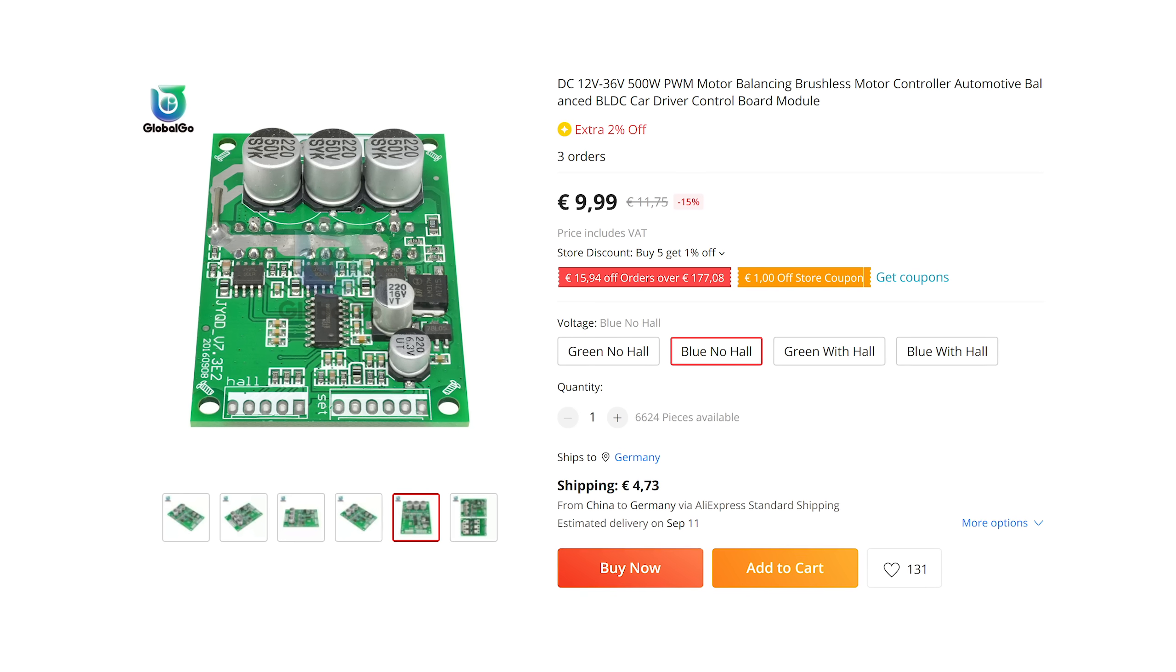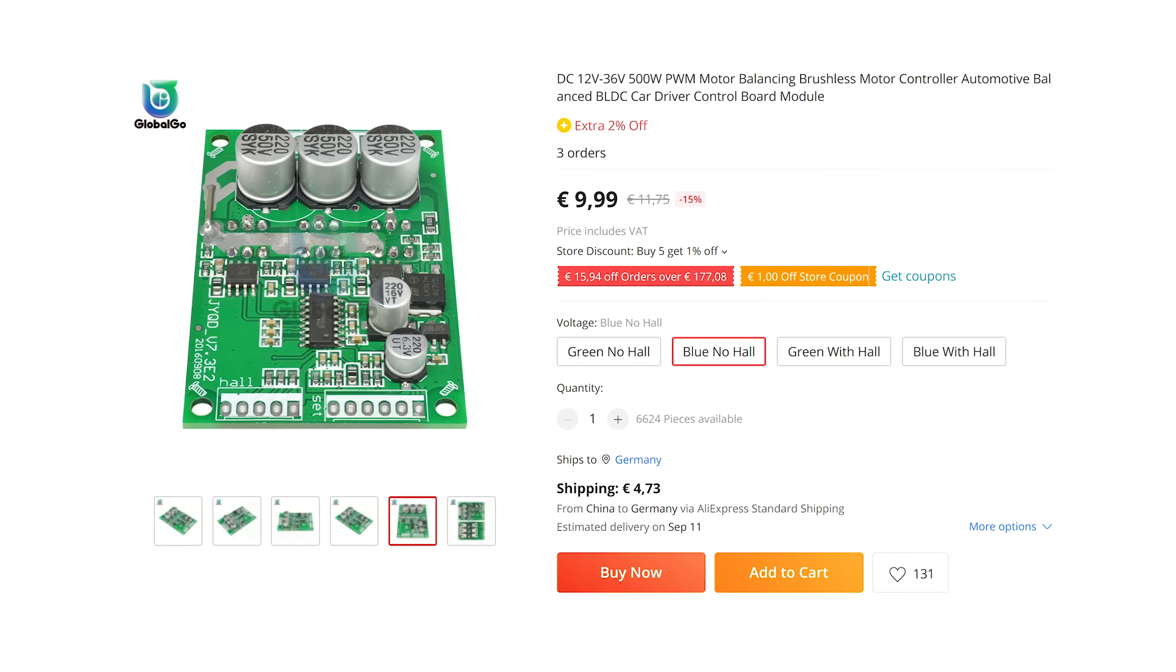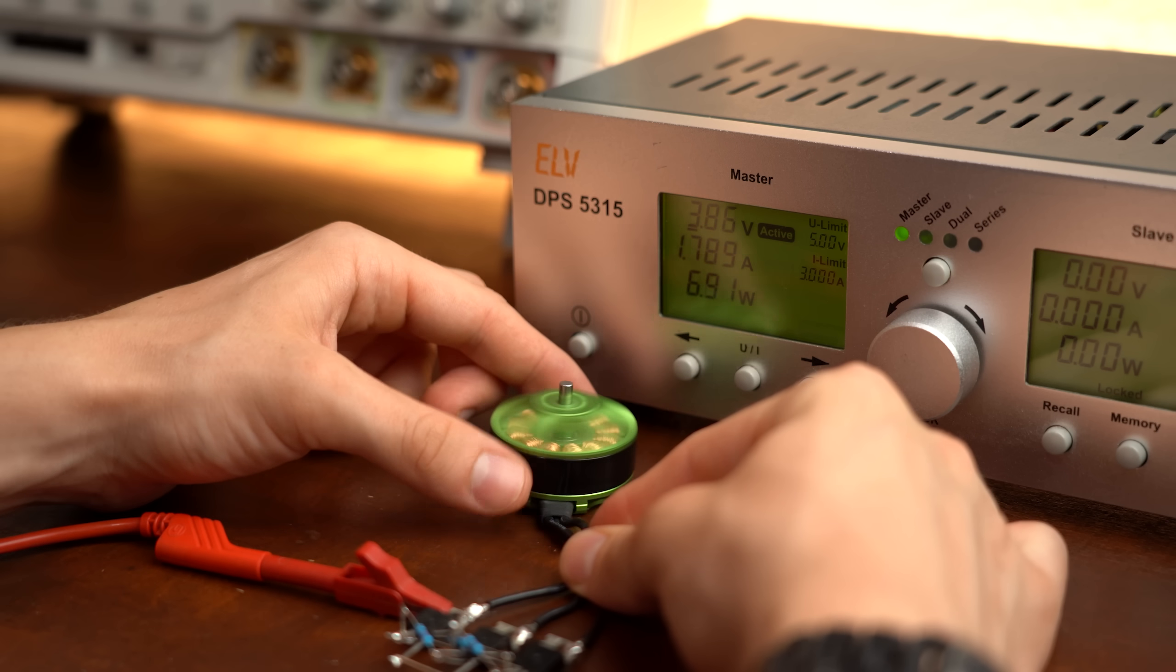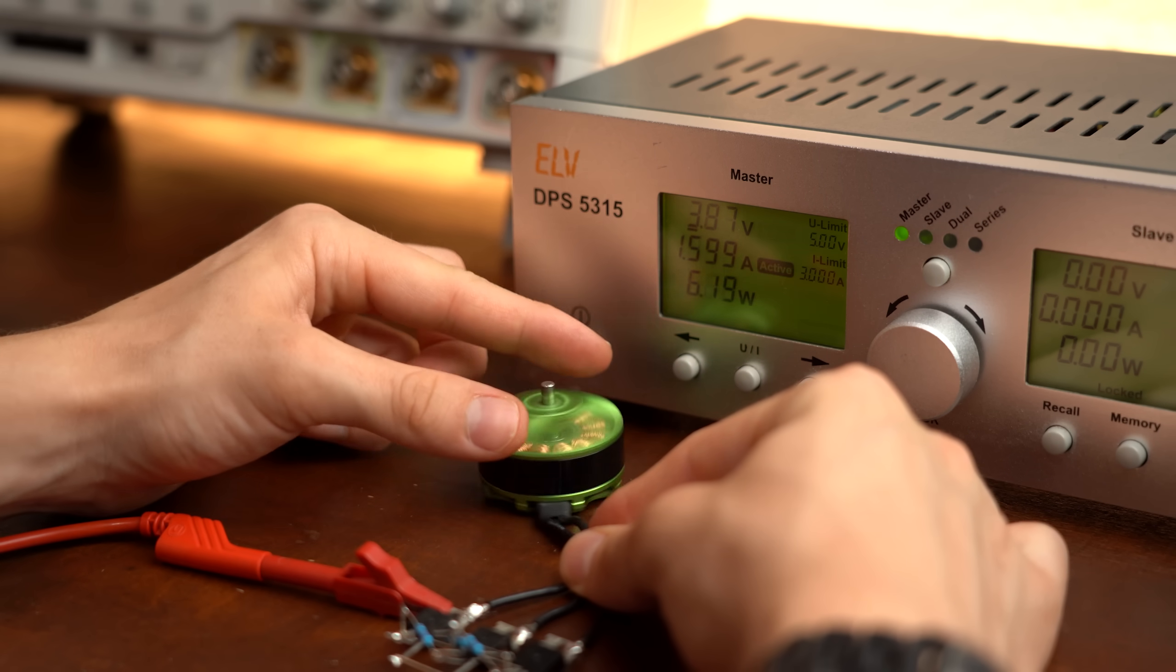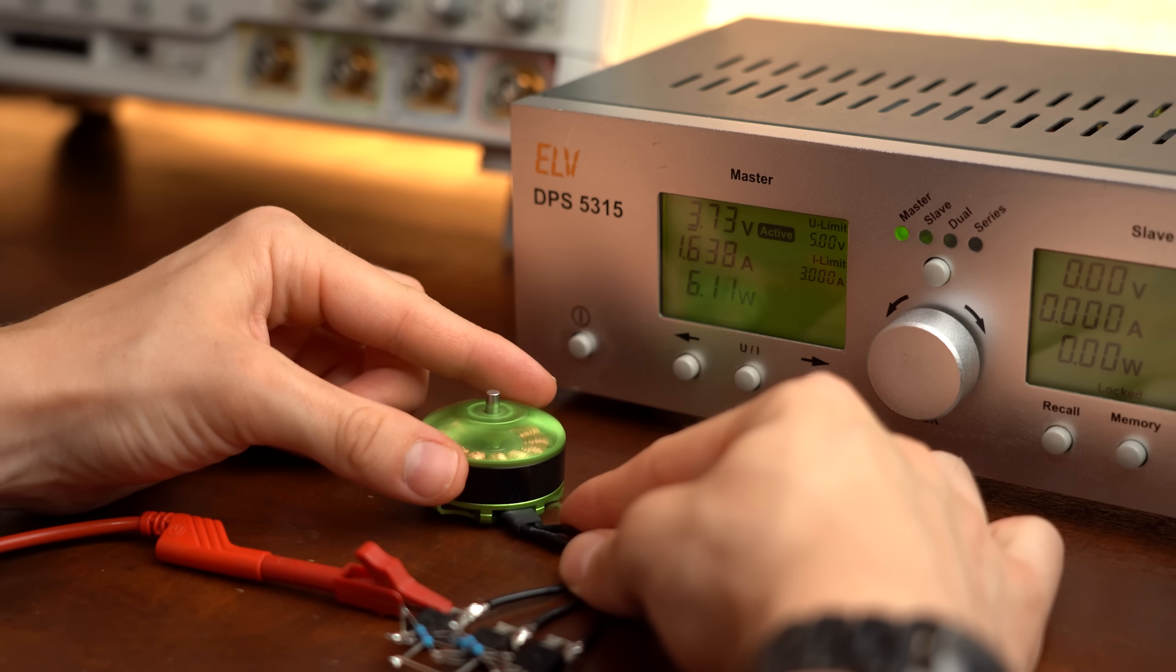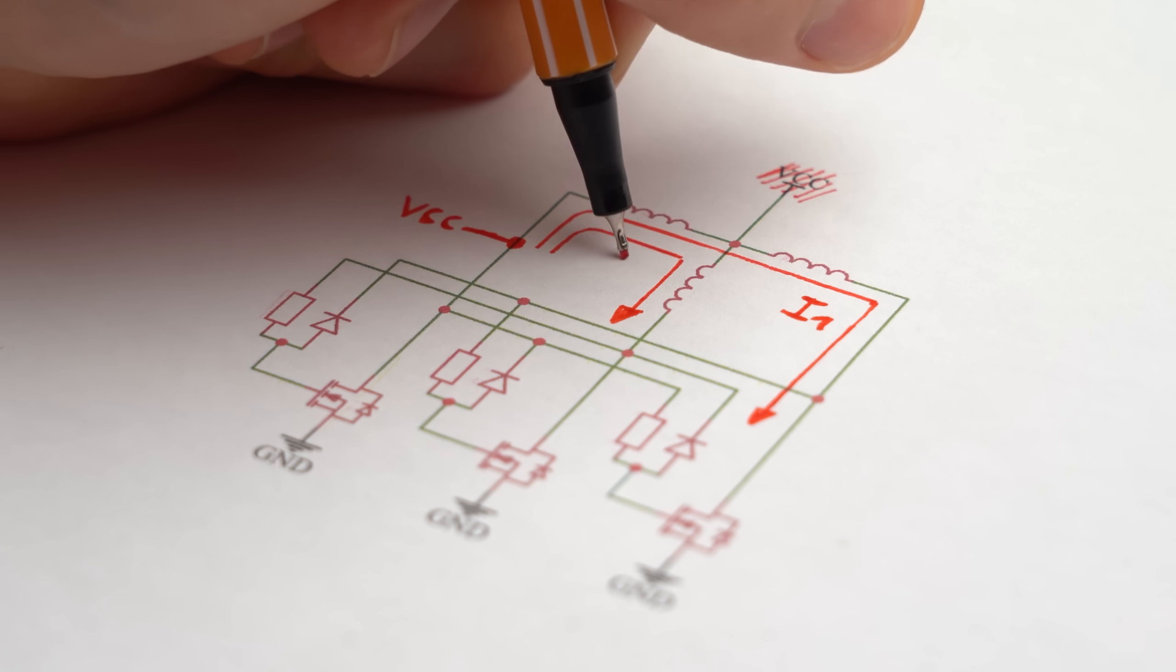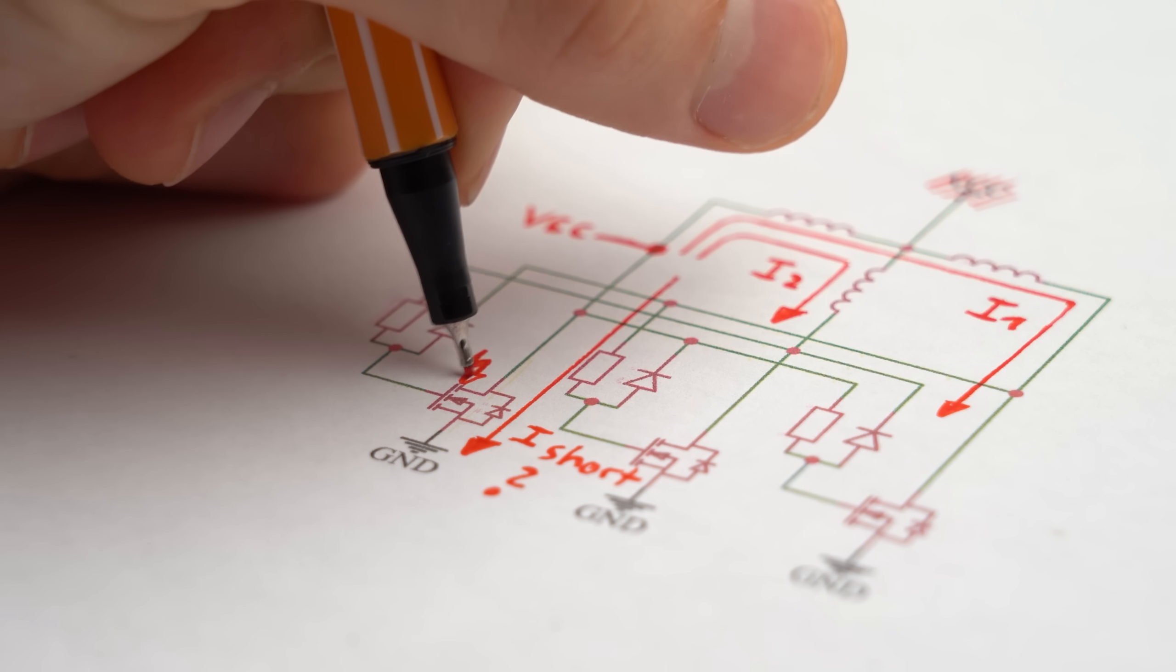But if you still want a cheap and simple ESC then get this one from AliExpress. With that being said I hope you enjoyed this video, and if you are still wondering why the driver also works with 3-wire motors just as good slash bad as with 4-wire ones, then let me tell you that I think that those two current paths are apparently enough. But this MOSFET right here will probably not like that for a long time.